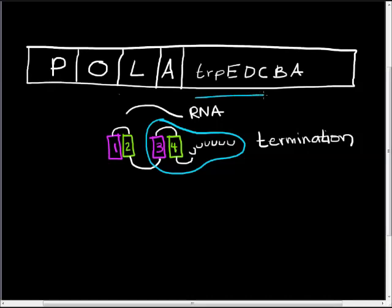In this case, TRIP E, D, C, B, and A will never be transcribed, and they will not be made into protein.